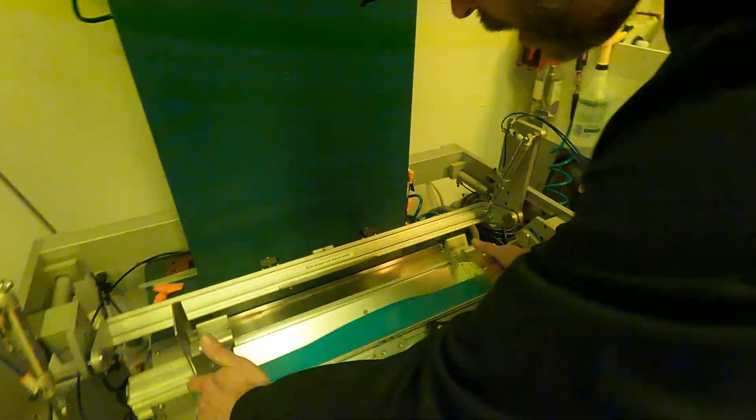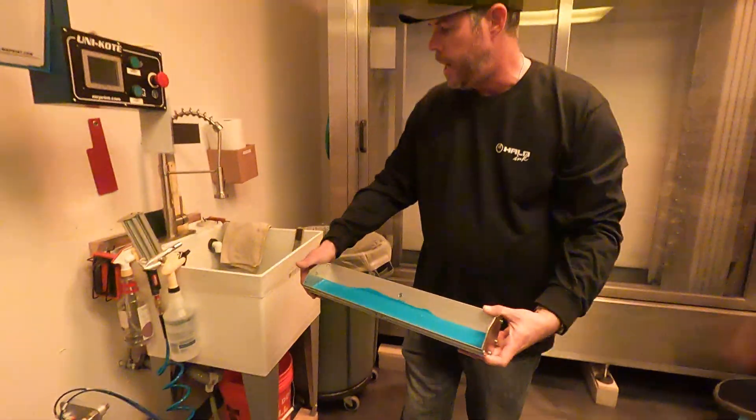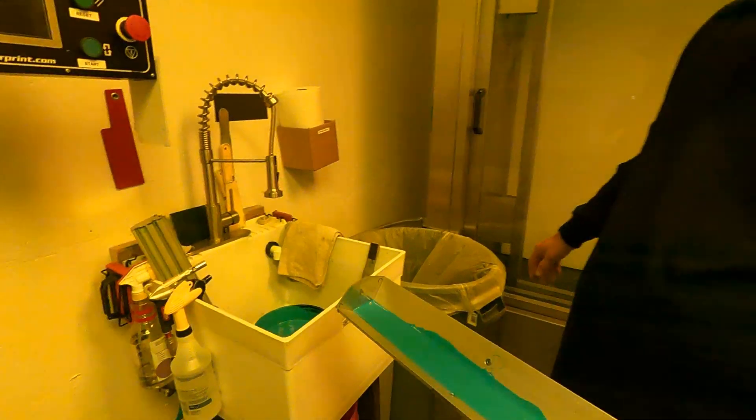So here we have our trough with our emulsion in it. What we do at the end is we're going to take this out and we dump it back into the emulsion container.